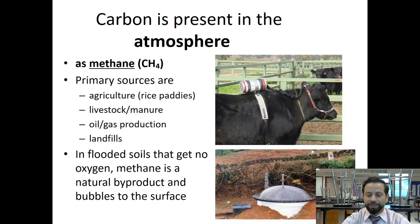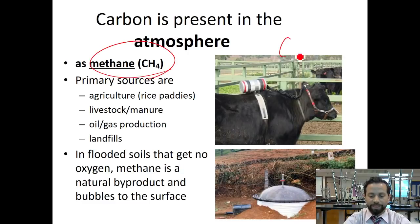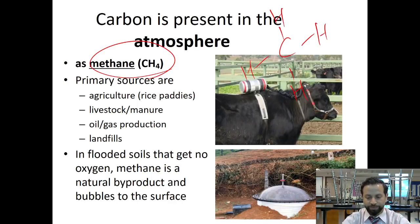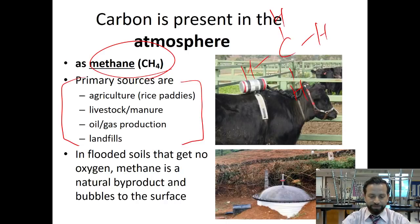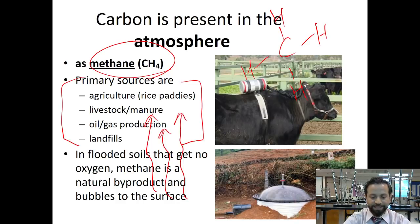Carbon is also found in the atmosphere in the form of methane, which is CH4. Remember, that's carbon with four hydrogens. These are some different places where you can find methane. Usually in flooded soils, methane is a natural byproduct that ends up bubbling to the surface — so if you ever see that, that's actually CH4 coming out.